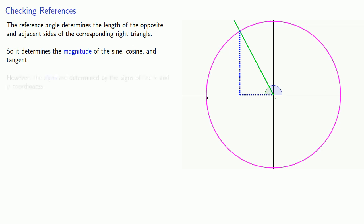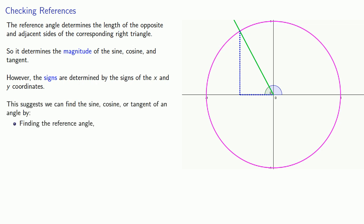However, the signs are determined by the signs of the x and y coordinates. And this suggests that we can find the sine, cosine, or tangent of an angle by finding the reference angle, determining the magnitude of the sine, cosine, or tangent, and adjusting the sign.